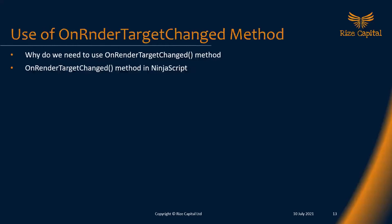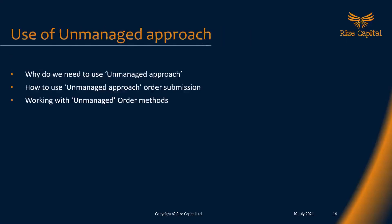After that, we'll talk about the OnRenderTargetChanged method — why we actually need to use it in NinjaScript. This is quite simple if you understand it correctly. The next topic covers the use of the unmanaged approach, which is a complex topic not suitable for beginner or advanced level. Even at expert level, you need to spend more time to master it. We'll cover why we need to use the unmanaged approach, how to use it for order submission, and working with unmanaged order methods. We'll cover everything needed at this level.